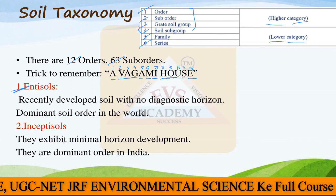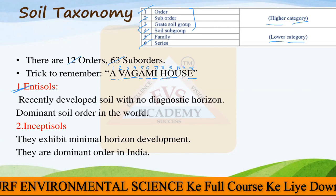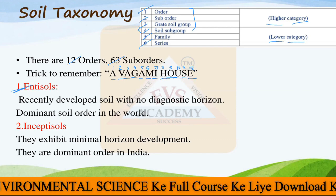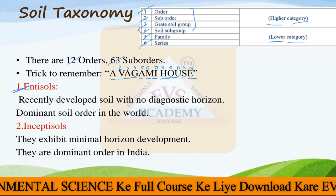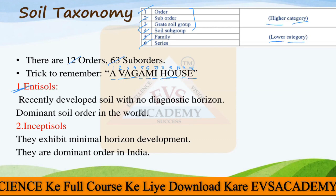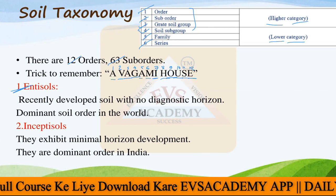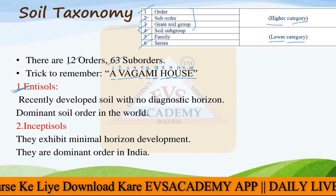If you include all the mountains, if you include all the terrains, if you include the alluvial soil as well, this will be the highest proportion of all soil types in the world.